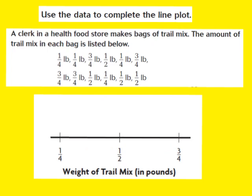The first amount is 1/4 pound. I'm going to count how many 1/4 pound bags of trail mix we encounter in our data set. I'll cross off the first 1/4 pound and put an X above that 1/4 in my line plot — that's 1. Here's 2, so I'll cross that one off and add another X above my 1/4 pound. Continuing across to my next 1/4 pound — that's 3, so I'll cross that off and place another X.